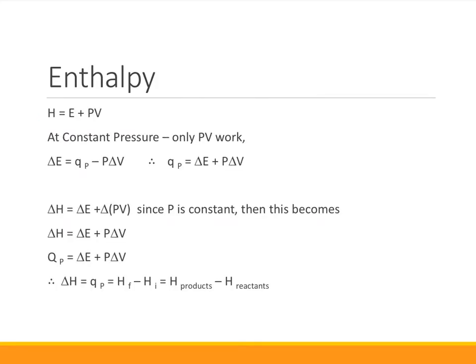Enthalpy is a quantity that chemists use to discuss the amount of heat changes inside a system. It is analogous to heat. Enthalpy H is equal to the internal energy plus PV, where PV is the work.